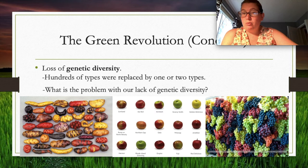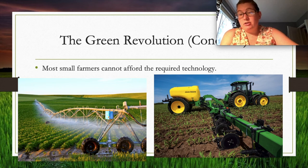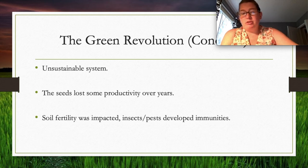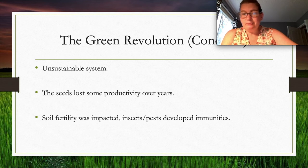One issue is that most small farms cannot afford the required technology — large tractors and equipment are very expensive. The Green Revolution's seeds also lost some productivity over time, soil fertility was impacted, and pests developed immunities. These are repercussions we're now seeing from the Green Revolution.